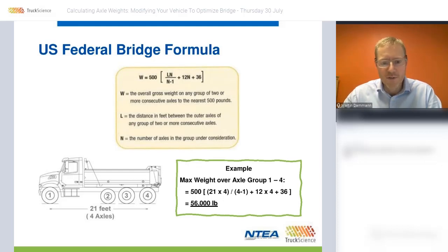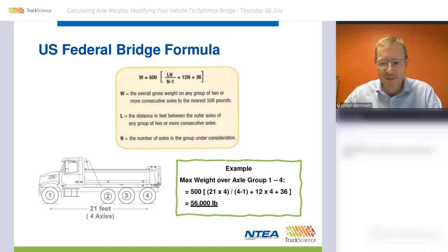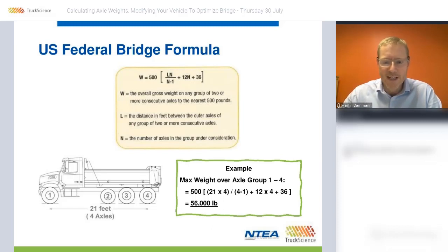With a few exceptions, the bridge formula is used to determine the maximum weight on any group of two or more consecutive axles. There are only two variables in this formula: the number of axles and the distance between the axles.